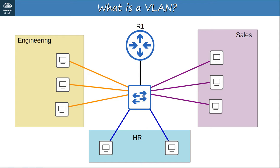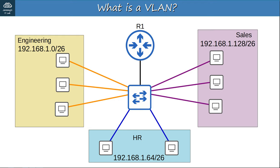So let's split up these departments into separate subnets: 192.168.1.0/26 for the engineering department, 192.168.1.64/26 for the HR department, and 192.168.1.128/26 for the sales department. However, there's one problem — the router is going to need an IP address in each subnet, so it will need one interface in each subnet. Let's replace this single connection between the switch and router with three separate connections, one in each subnet. Actually, there is a more efficient way of doing this — you don't have to use three separate interfaces — but I will cover that in a future video.